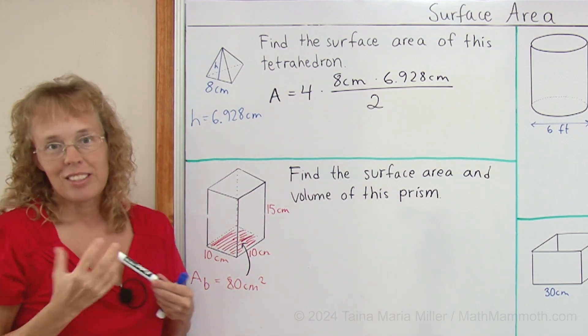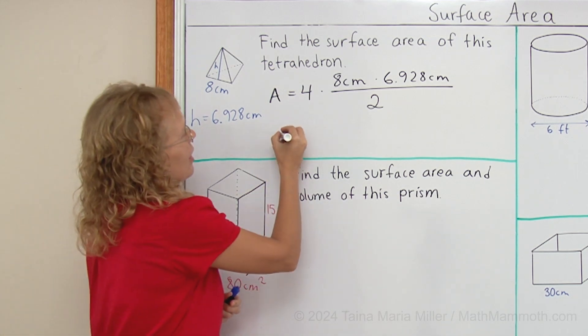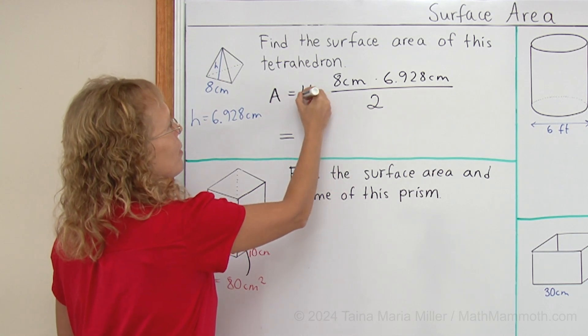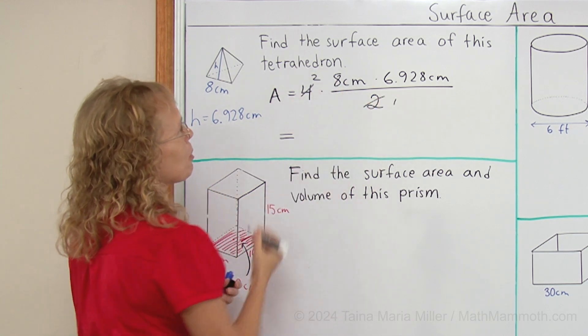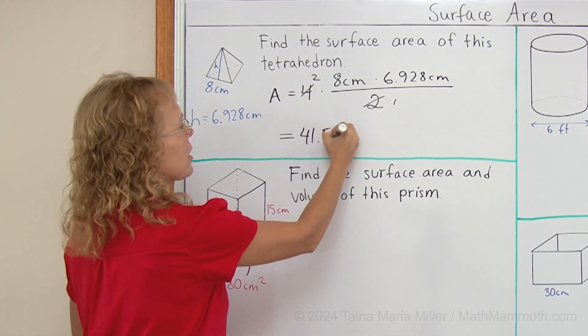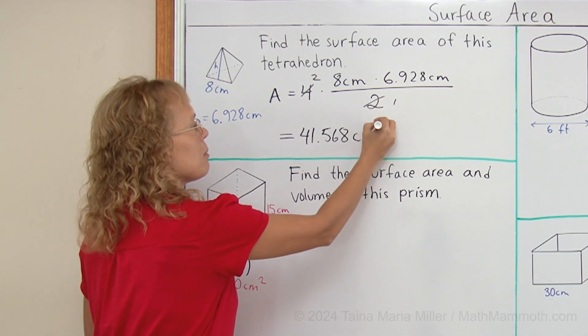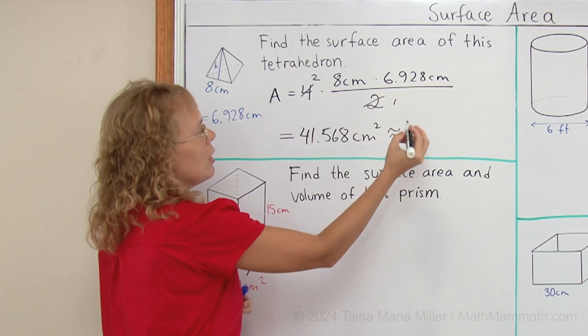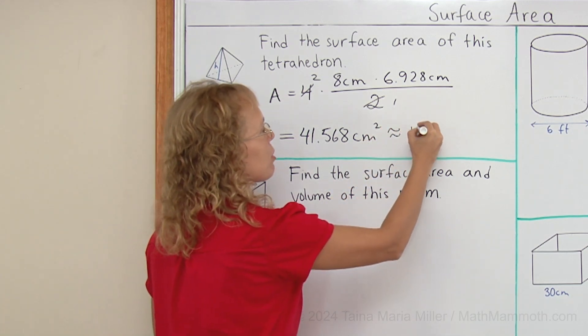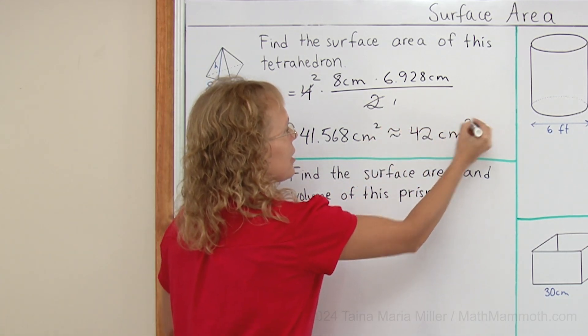And now all you need is a calculator. And of course you can simplify here, 4 divided by 2. You get 2 here and 1 here. And the area will be 41.568 square centimeters, which we will round, for example, to the nearest whole square centimeter we would get 42 square centimeters.